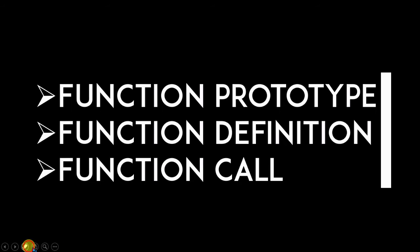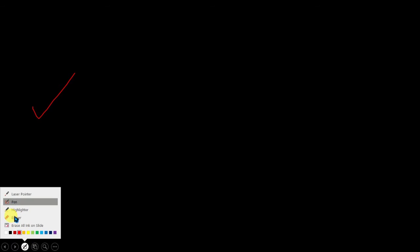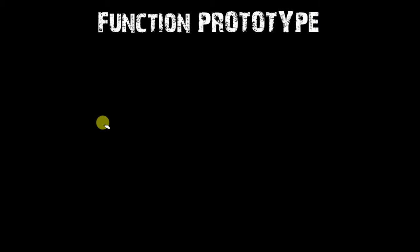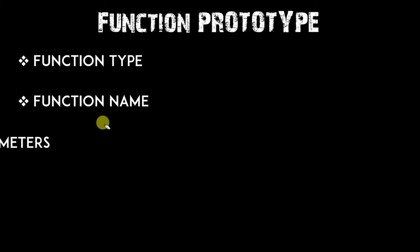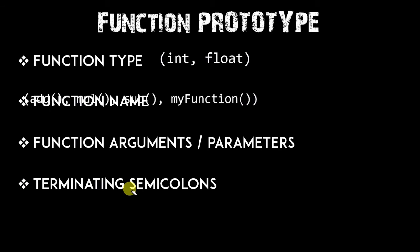In this video I will explain about the function prototype. So what is the function prototype? In the function prototype, we have to declare the function type, the function name, the function arguments and parameters, and a terminating semicolon.